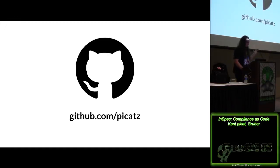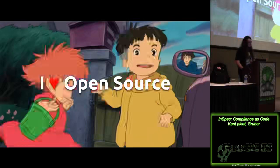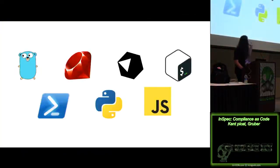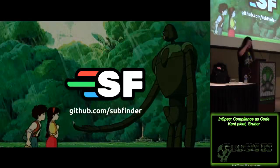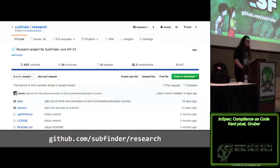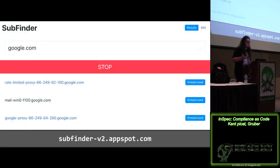I can find all my code on GitHub. I open source almost all of my stuff — some of the stuff from this talk will also be up once the talk is done. I love open source. Some projects I've contributed to: I like Subfinder, a subdomain enumeration tool, open source at github.com/subfinder. There's even a web application at subfinder-vspot.appspot.com where you get 500 results for free.